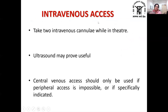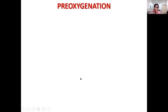Intravenous access may be difficult in these patients. It is prudent to take at least two intravenous cannulae when the patient is in the OT. Ultrasound can be used if peripheral IV veins are not found due to subcutaneous fat. If IV access still cannot be obtained, central venous cannulation may be required.